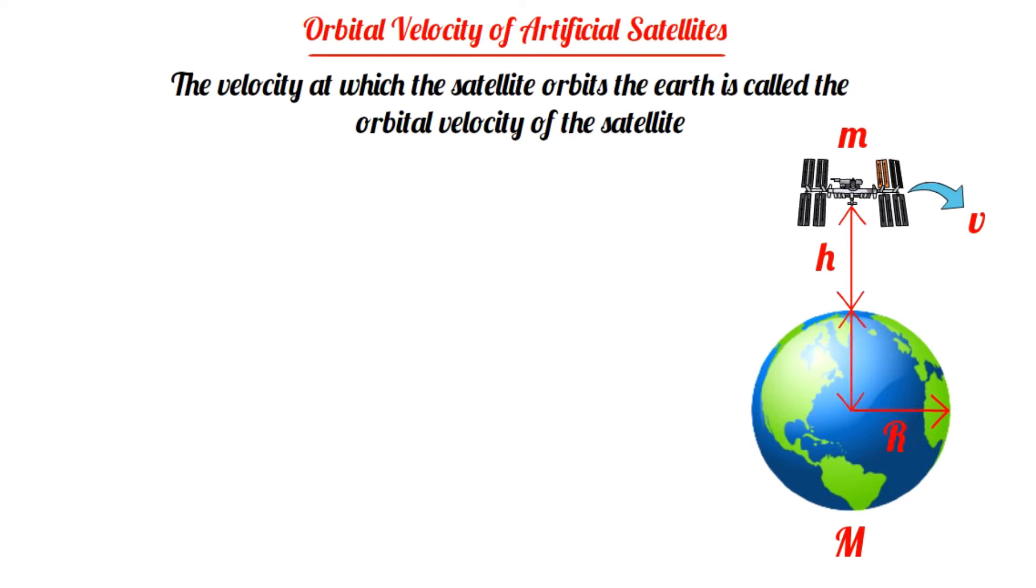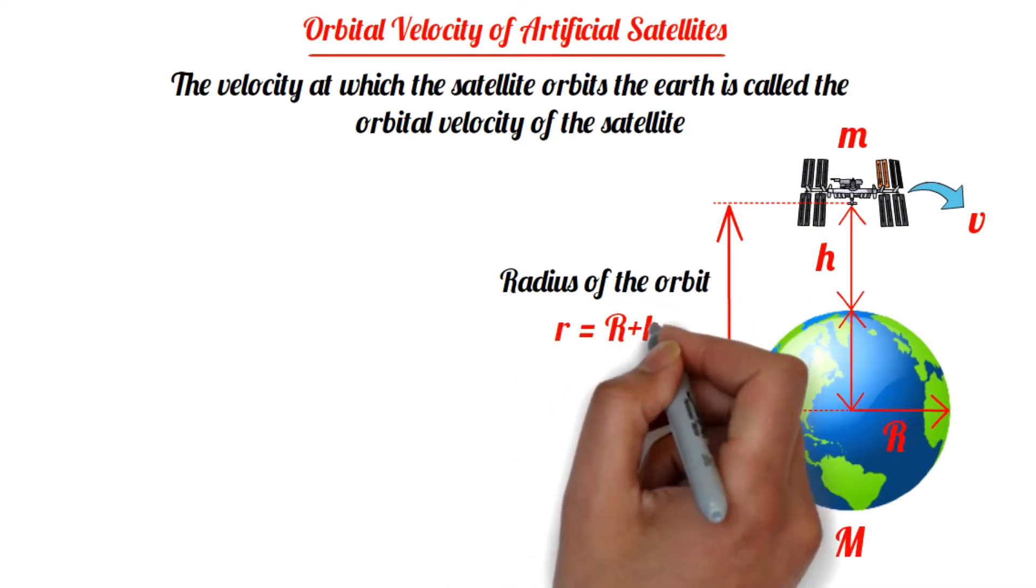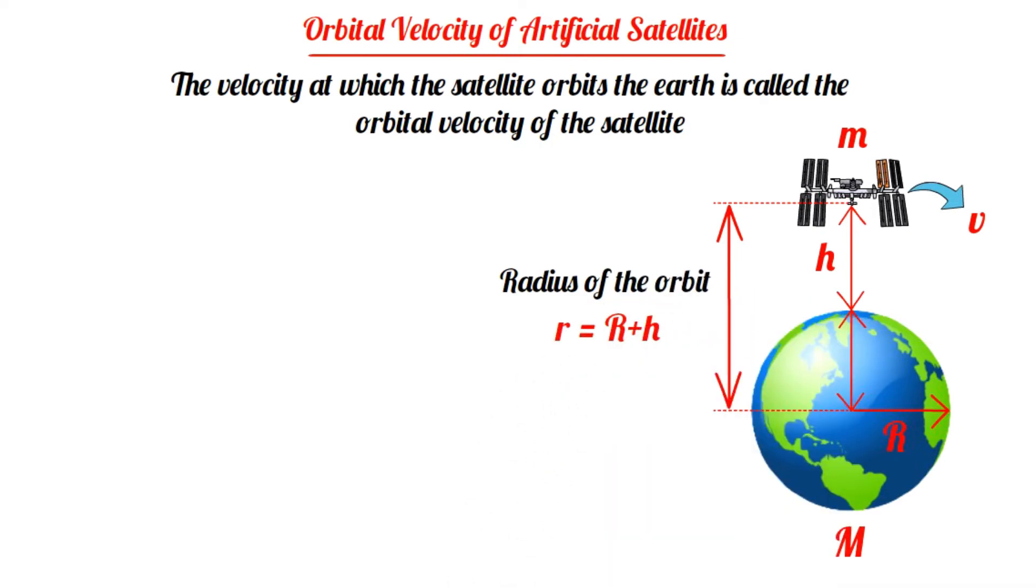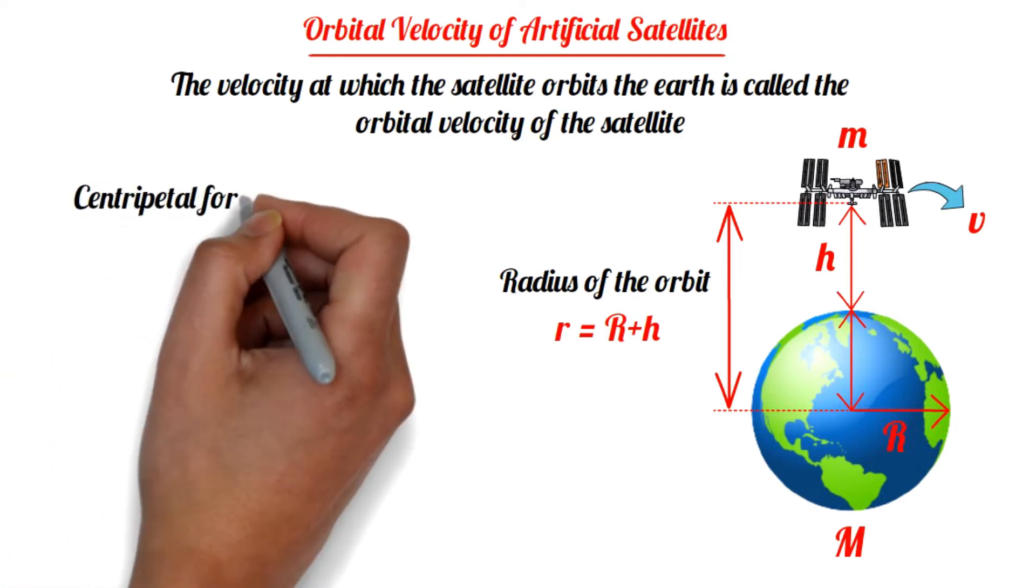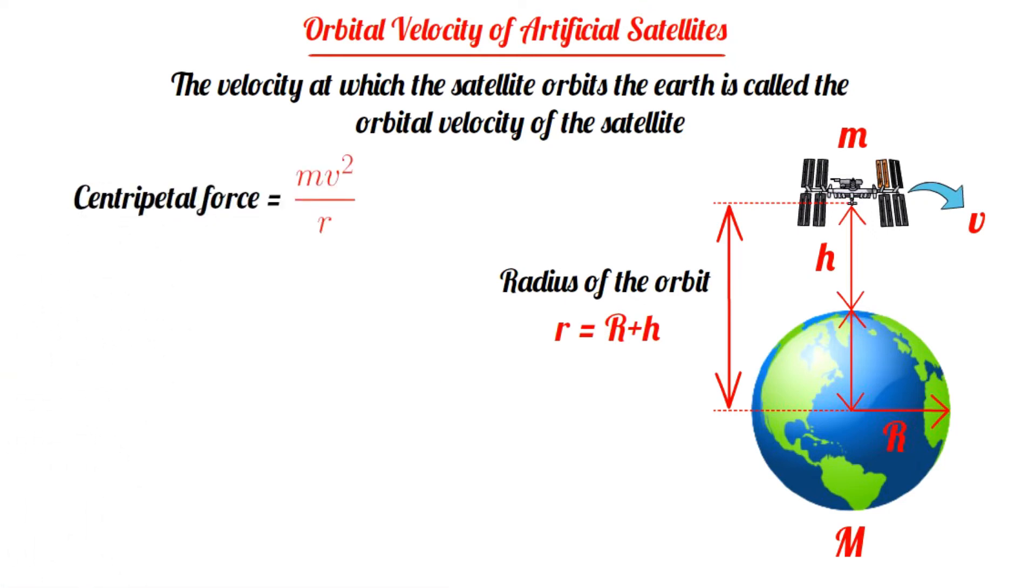Hence the distance of the satellite from the center of the Earth, that is the radius of the orbit, small r equals capital R plus h. Let's assume the orbit to be circular, then the centripetal force equals m v squared by r, or m v squared divided by capital R plus small h.